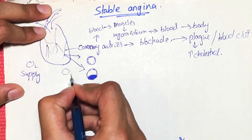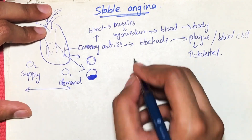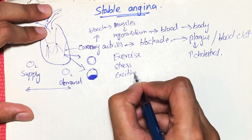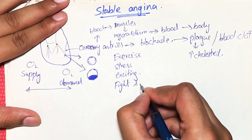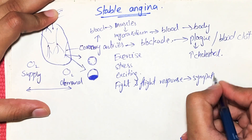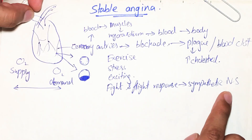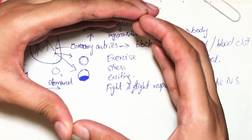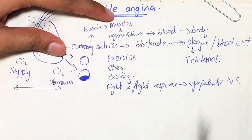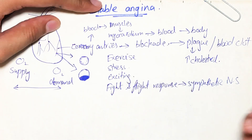Normally there is no problem in blood flow and there is balance between oxygen supply and oxygen demand. But when there is some physical activity like exercise, or you are under stress — essentially a fight-or-flight response where your sympathetic nervous system is activated — what happens is that the sympathetic nervous system causes constriction of blood vessels. There is vasoconstriction because in fight-or-flight you want your brain working rather than your GI tract.